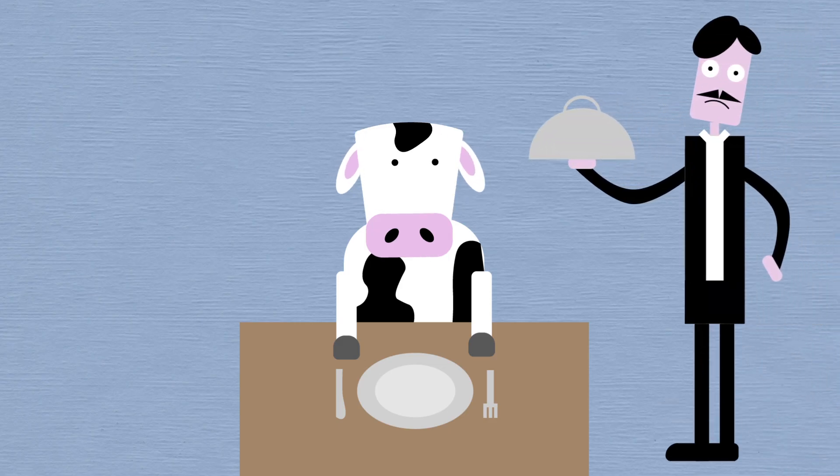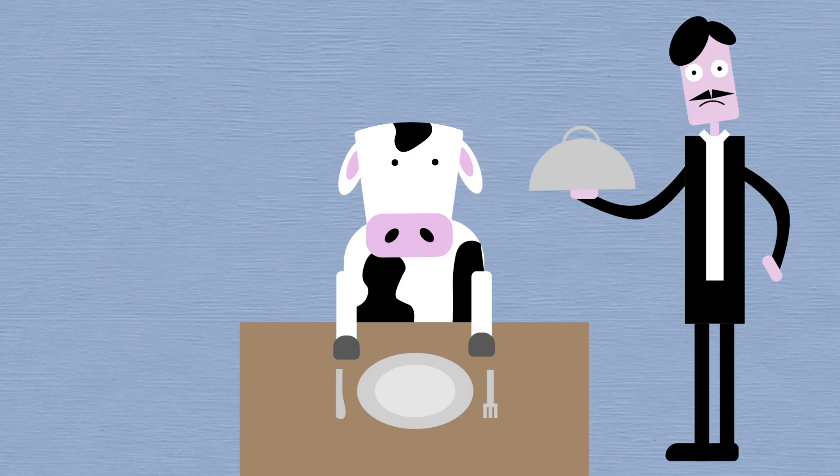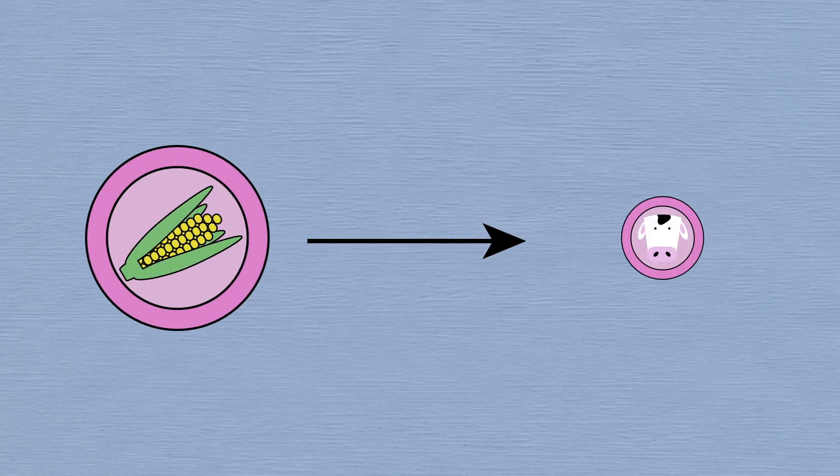Typically, the conversion of food biomass into the consumer's biomass involves an efficiency of around 10%. This means that it takes around 10,000 pounds of corn to grow a 1,000-pound cow.